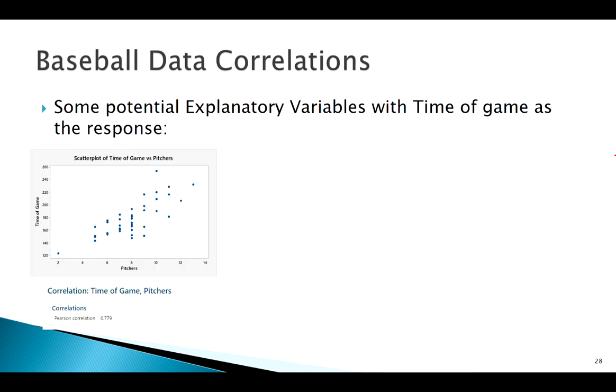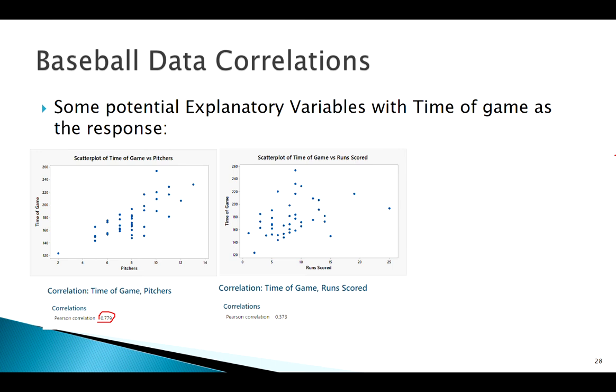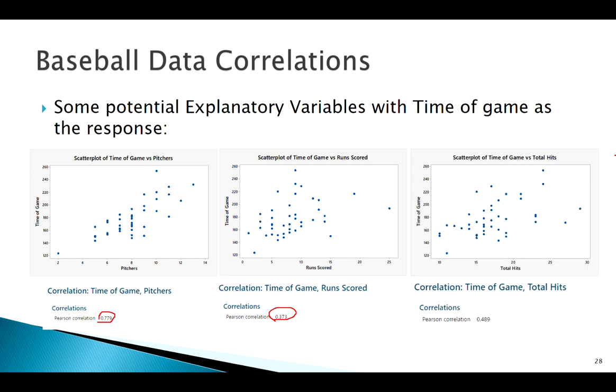So remember R in our baseball example. We've got pitchers here. We said it was pretty strong, pretty linear. Turns out our correlation coefficient, that's pretty high. That's 0.8. Our correlation coefficient with runs in time of game, still positive, but not great, 0.37. Hits in time of game, almost 0.5.